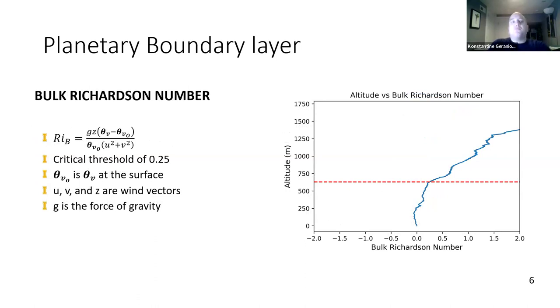The final method we used was the bulk Richardson number. We're looking for when it crosses a critical threshold of 0.25. It's a unitless number. Your z, u, and v are wind vectors, g is your force of gravity, and then you also have your virtual potential temperature where you are and your virtual potential temperature at the ground. Where that number crosses 0.25 is where we consider the planetary boundary layer height to be.